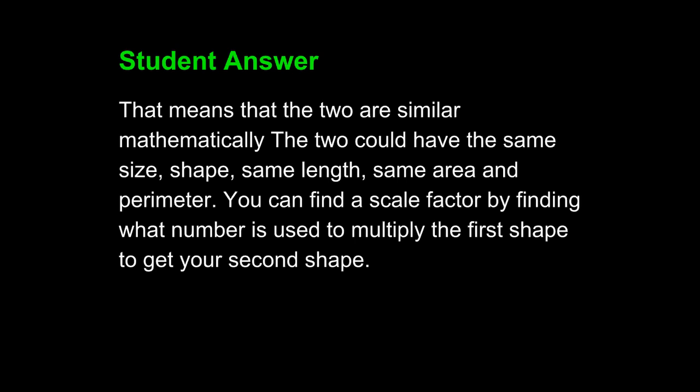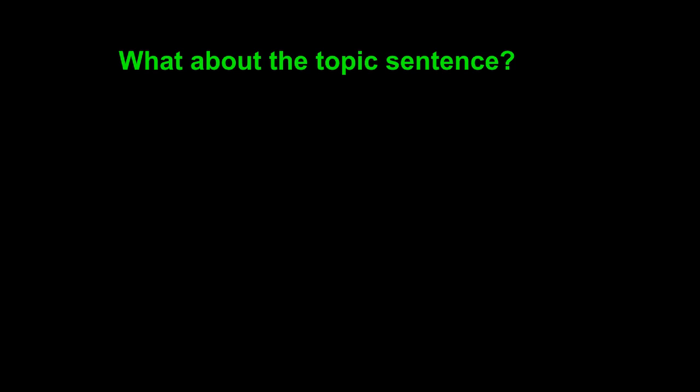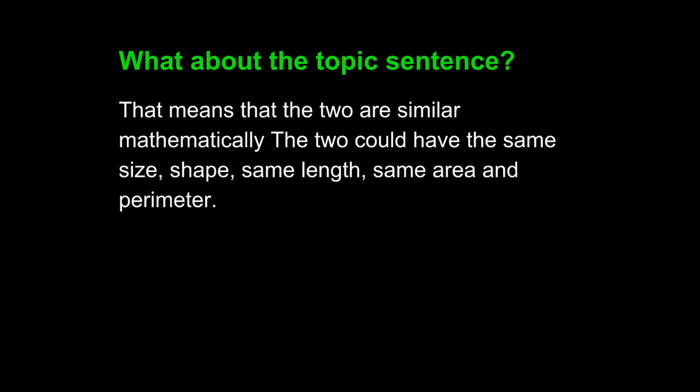While this answer is moving in the right direction, it represents several problems in writing. Let's take a look first at the topic sentence. The topic sentence of this student's answer is: that means that the two are similar mathematically. The two could have the same size, shape, same length, same area, and perimeter.